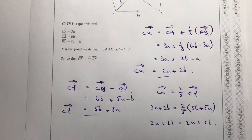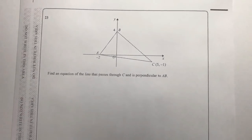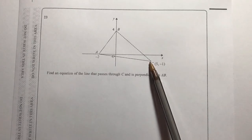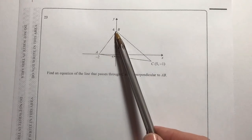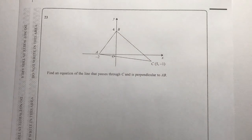Vectors are quite challenging and can take a little bit of time, so please do have a look at some of the videos on the playlist within the channel — there are lots of examples of these sorts of vector problems. Let's move on to the final question of this paper, question number 23. We've got to find the equation of the line that passes through C and is perpendicular to AB.